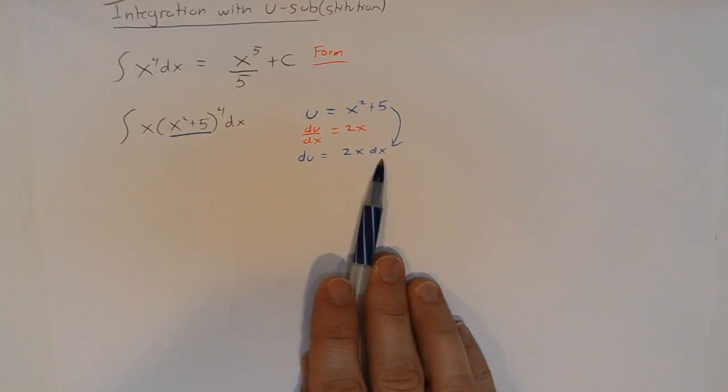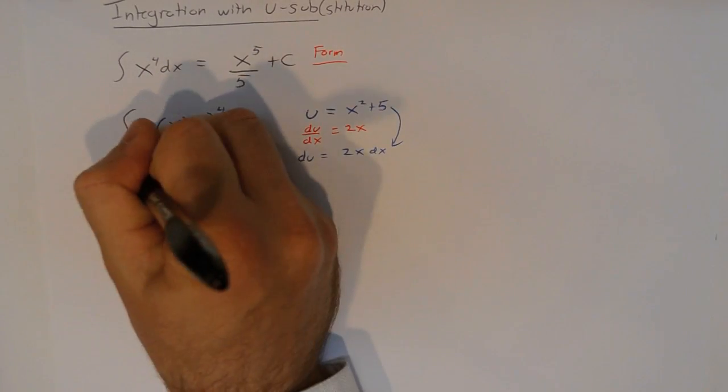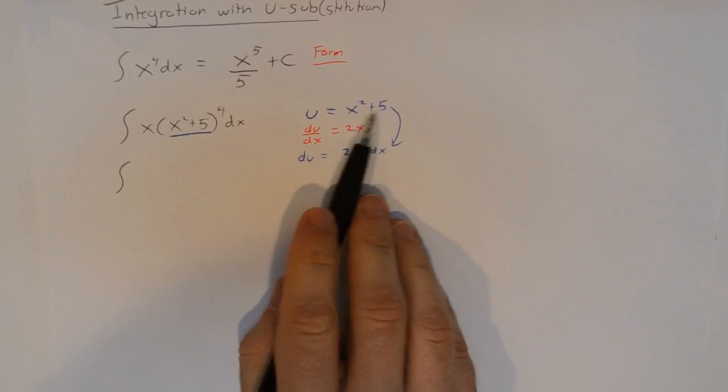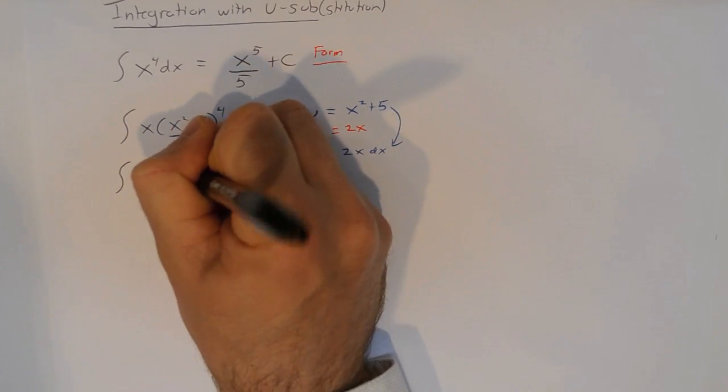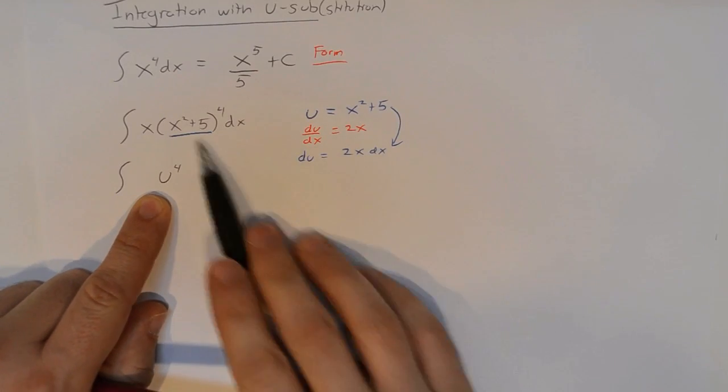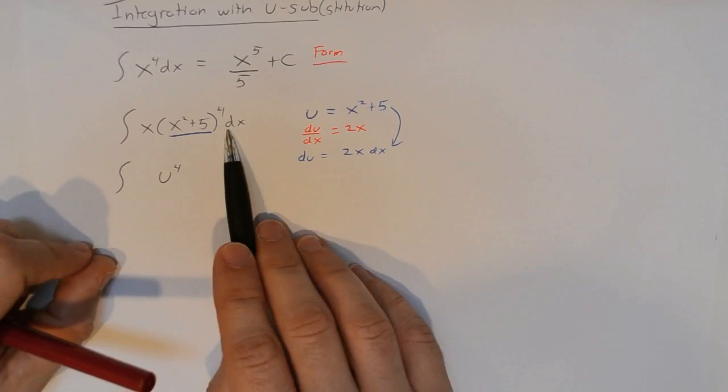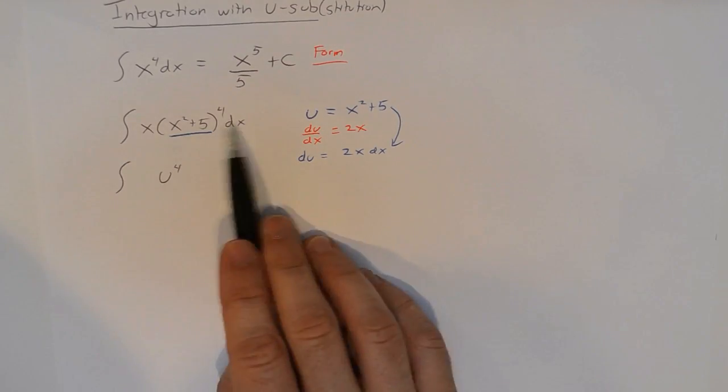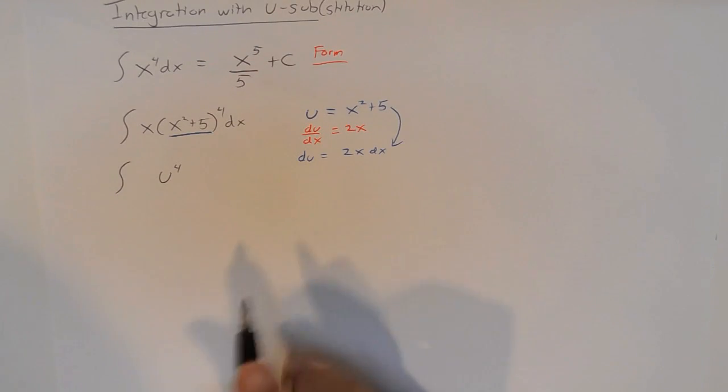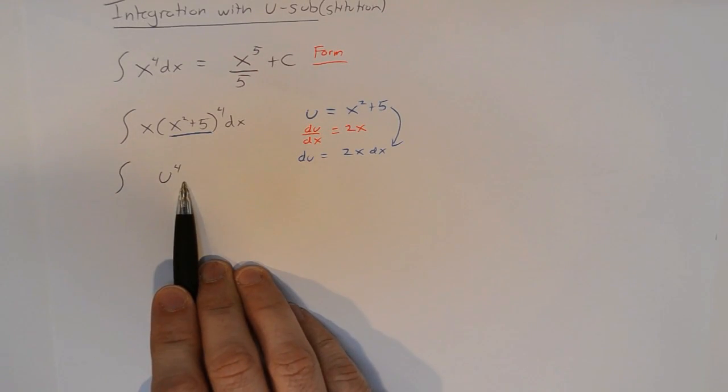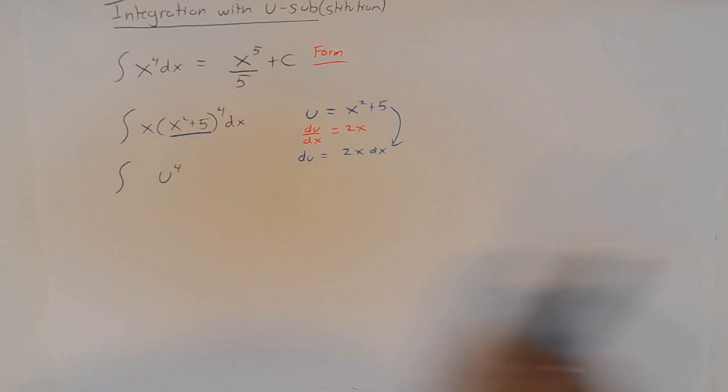So, what's going on here though? If du is 2x dx, and u is x squared plus 5, let's go back to this original integral. I can rewrite this. If u is x squared plus 5, then this piece here can simply become u to the 4th. I still have this x dx here though, and I have to make sure that I've replaced everything from the original integral. Well, I could put a du over here, but if I put a du here, what I'm really doing is adding a 2x dx, because that's what du is. So, how do I fix that?